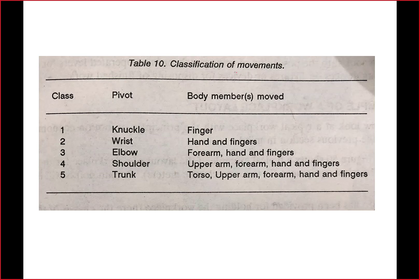Regarding the classification of movements with respect to body parts used: Class 1 is the most preferred, where the pivot is the knuckle and the body member used is the finger. Class 2 has the pivot at the wrist, using hand and finger. Class 3 has the pivot at the elbow, involving the forearm, hands, and fingers. Class 4 has the pivot at the shoulder, and body parts used are the upper arm, forearm, hand, and finger.